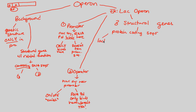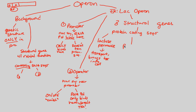One structural gene is lactose permease — a transmembrane transport protein that brings lactose into the cell. Another structural gene is beta-galactosidase. Notice both names end in '-ase,' meaning they are enzymes and thus proteins with a specific function.